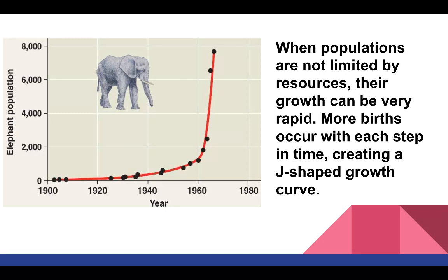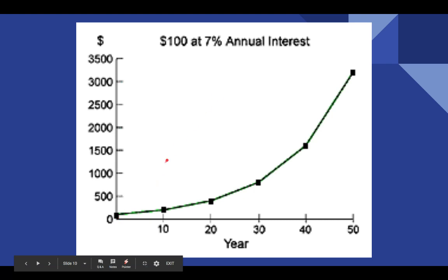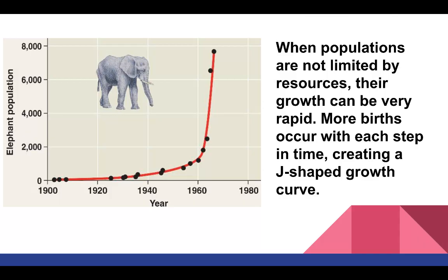We see this J-shaped curve all the time — it could be elephants, plants, whatever it is. When resources are not limited, we see this very rapid growth in J-shaped curve form. The best way to think of it is a savings account. You put $100 in your savings account increasing at 7% every year. The first 10 years it's not doing much, but that amount accrues every year and eventually we see a large spike in your money by years 30 and up, should you not spend it.